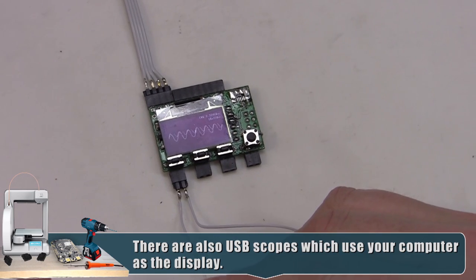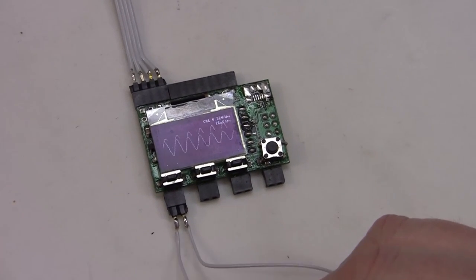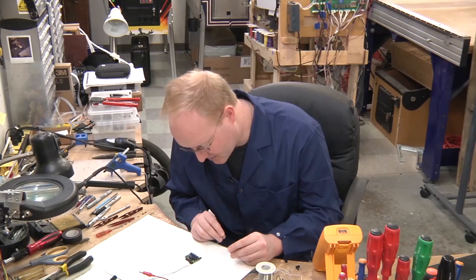It's basically just an OLED screen, op amp, and AVR microcontroller, but it does function as a, I believe, 20 kilohertz oscilloscope, and it even has an eight-channel logic analyzer on it.